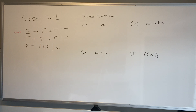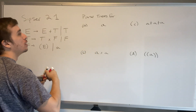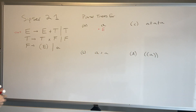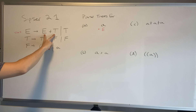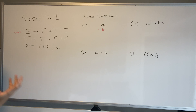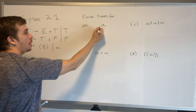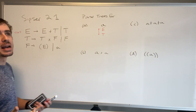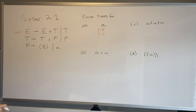We need to make a parse tree for just the letter 'a'. We always have to start with the start variable, so we make a node for E. Now we have a choice of whether to apply E→E+T or E→T. We can't apply E→E+T because that means we'd generate the plus character, and in a context-free grammar you can't get rid of a terminal once you generate it. So we have to apply E→T.